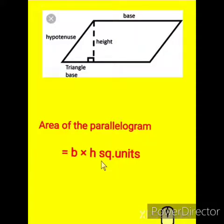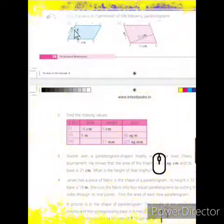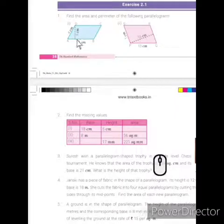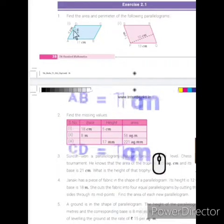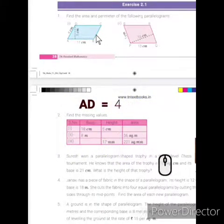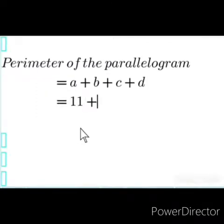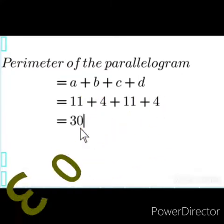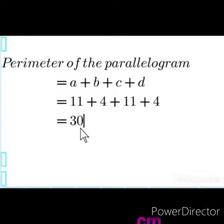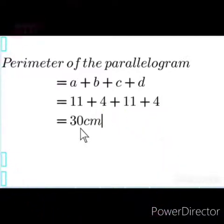Now we will see an example of how to calculate the perimeter and area of a parallelogram. We are going to find the area and perimeter of the following parallelogram. We all know that in a parallelogram, opposite sides are equal. So AB is 11 centimetres and CD will also be 11 centimetres, and AD will be 4 centimetres and CB also 4 centimetres. To calculate the perimeter, the value for A is 11, B is 4, C is 11, and D is 4. Adding these numbers, the answer is 30 centimetres. So the perimeter of that parallelogram is 30 centimetres.